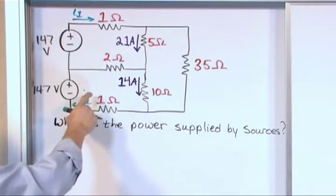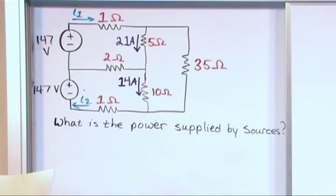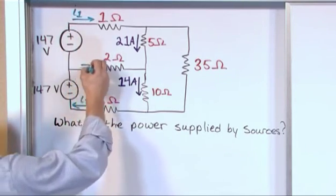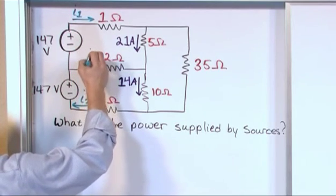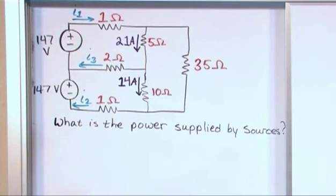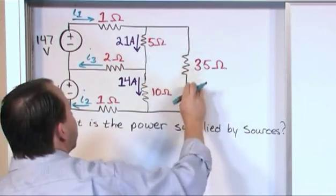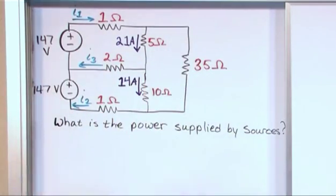I sub one going through the top source. I sub two going through like this. And let's go ahead and label this guy I sub three right there. Now let me see if this makes sense. And I'll explain to you why I didn't label a current over in this leg. You might say why didn't you label that.